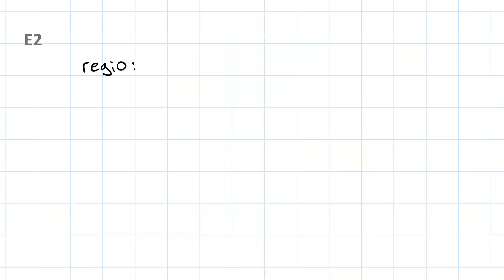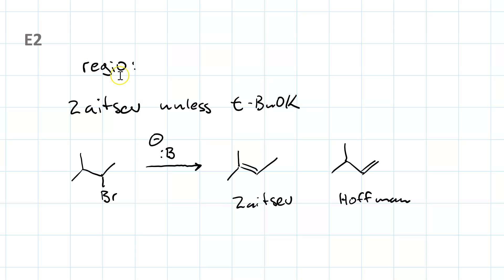For E2, the regiochemical consideration is you get Zaitsev unless you're using a bulky base like tert-butoxide. So if our base is NaOH, NaOME, sodium methoxide, or NaOET, sodium ethoxide, we're going to get the Zaitsev product. We'll get the Hoffman product, the less substituted alkene, if our base is tert-butoxide.